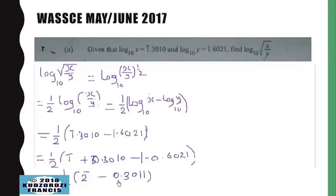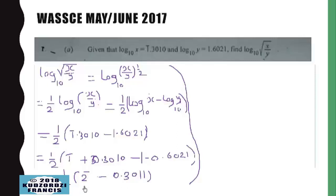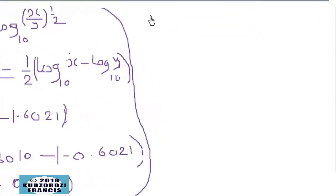As stated, the mantissa can never be negative, so we need to find a way out. We add and subtract an integer such that the mantissa becomes positive, but that integer must also ensure that after dividing, the characteristic remains an integer. The least integer we can add here is 2.